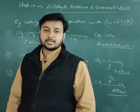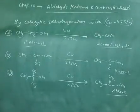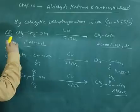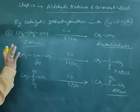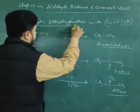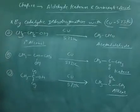Today we discuss a very important chapter: aldehydes, ketones and carboxylic acids. In this, we discuss an important topic - the method of preparation of aldehydes and ketones by catalytic dehydrogenation with copper at temperature 573 kelvin.